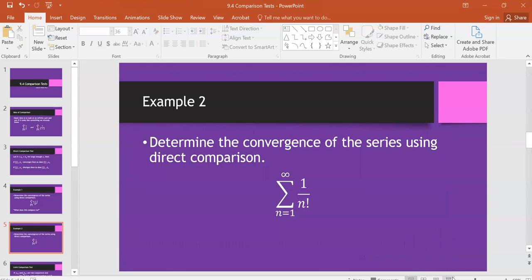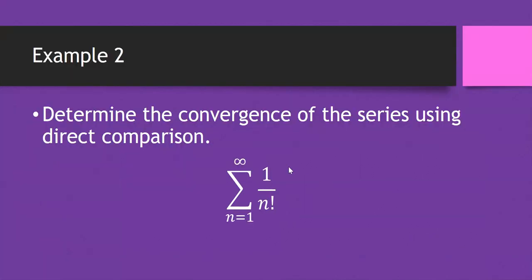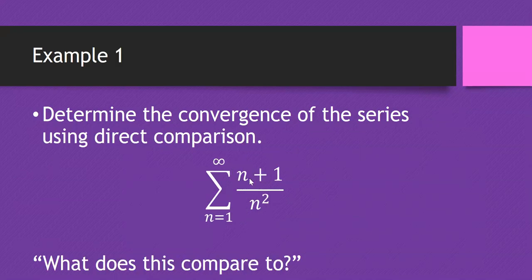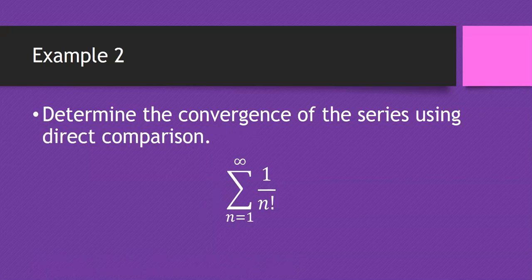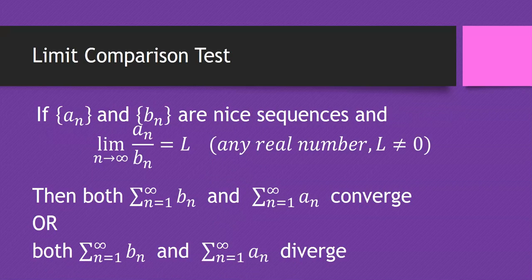The direct comparison is nice when dealing with something like 1/n!. But if I said what about (n-1)/n², direct comparison wouldn't work. Even though n-1 and n+1 probably grow at about the same rate, direct comparison doesn't apply. So instead of using direct comparison for a lot of rational functions, it's easier to use a limit comparison test.